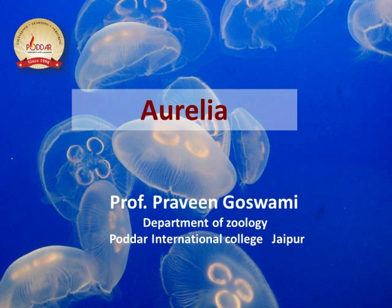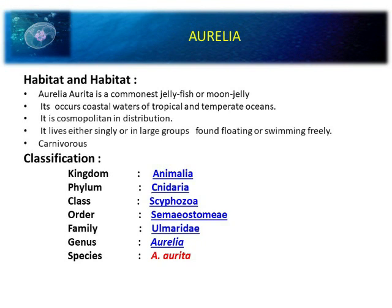Dear friend, myself Professor Pravind Goswami, Department of Jurojee, Poddar International College. Today we will discuss about a salient animal, that is Aurelia. Aurelia is a very important animal. Common name is jellyfish or moon jelly, because the animal has a jelly-like structure. So that is called jellyfish or moon jelly.